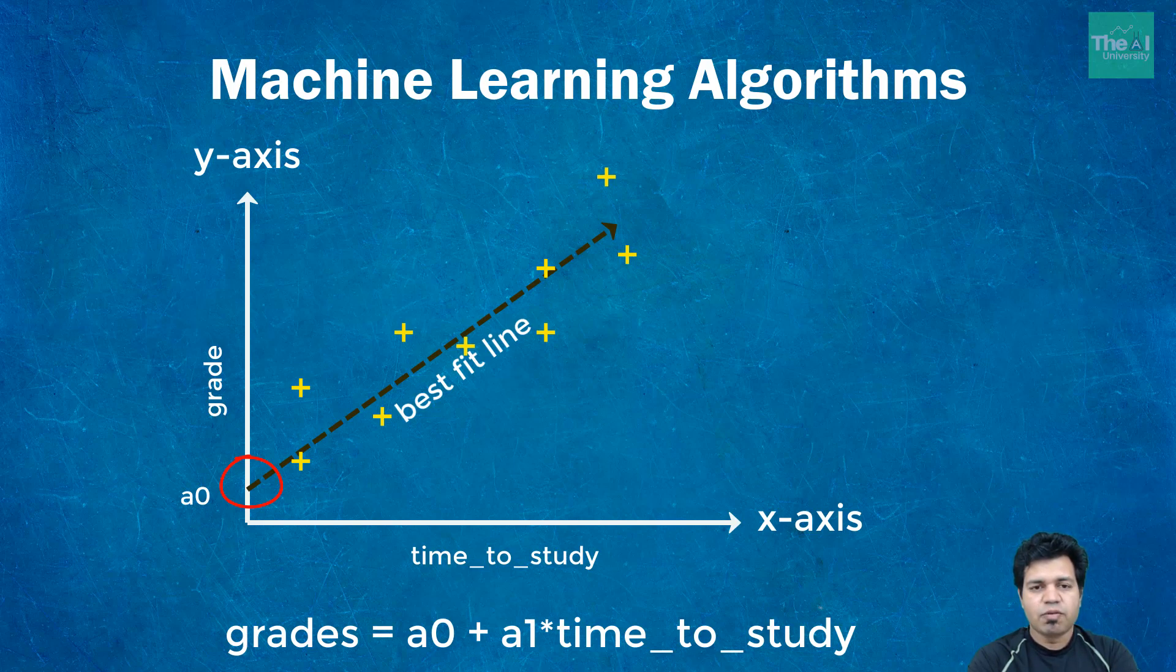Suppose the value of a0 here is 1.2, so the formula here will become grades equals to 1.2 plus a1 into time to study.